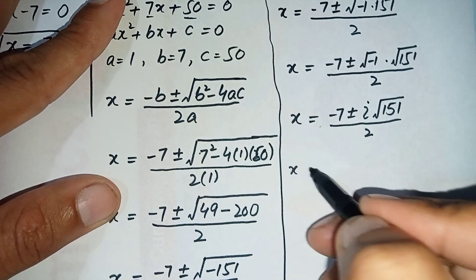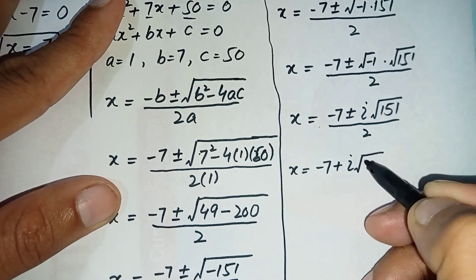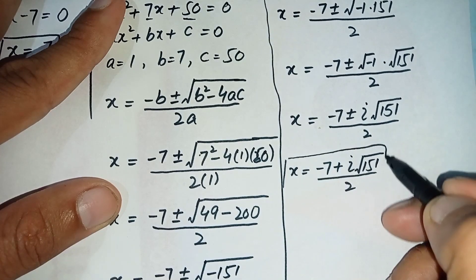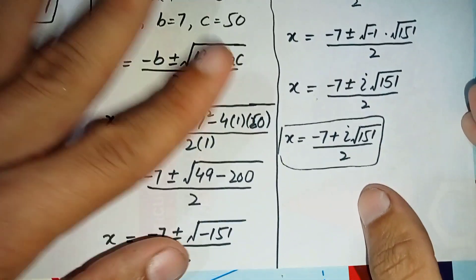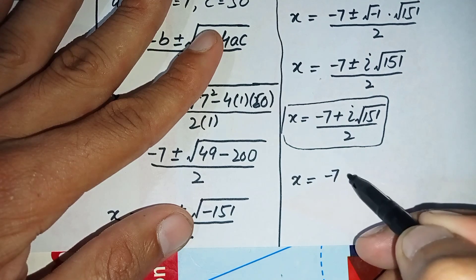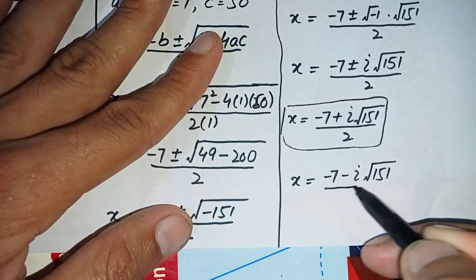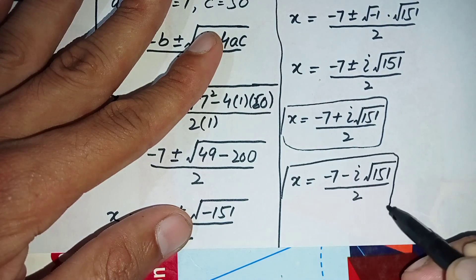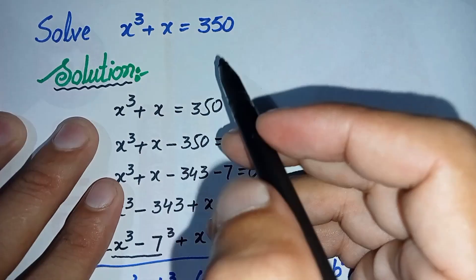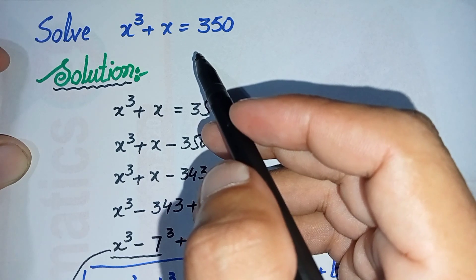So there are two possible complex values of x. The second possible solution is x = (-7 + i√151) / 2, and the third possible solution is x = (-7 - i√151) / 2. These are the two complex solutions of this cubic equation. Don't forget to subscribe to our YouTube channel for more videos. Thank you so much for watching, take care, bye bye.